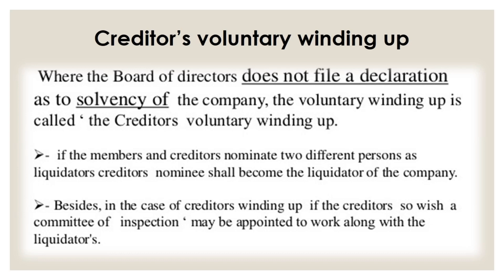Next is creditors' voluntary winding up. Creditors' voluntary winding up is when the directors of the company cannot file a declaration of solvency about the company and the creditors themselves argue for winding up of the company. If the members and creditors appoint different persons as liquidators, the creditors' nominee will become the liquidator of the company. In the case of creditors' winding up, if the creditors so wish, a committee of inspection may be appointed to work along with the liquidators. The creditors can also appoint an inspection committee to assist the liquidators.